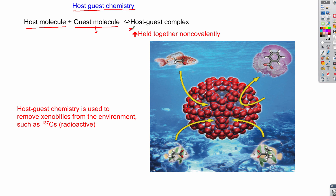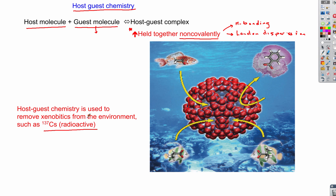One important thing to realize about host-guest complexes for answering questions: these interactions are not covalent. They could be hydrogen bonding or London dispersion forces, but the molecules are non-covalently bonded to each other. Nowadays, host-guest chemistry is used to remove cesium-137, which is radioactive, from the environment. So host-guest chemistry involves forming a complex in order to remove a xenobiotic from our environment.